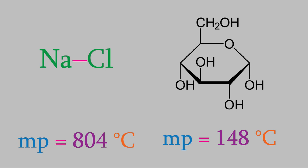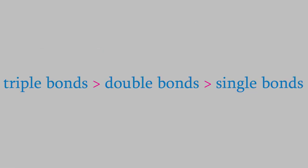This is because, unlike glucose, ionic compounds are connected by strong ionic bonds. We can also make predictions about the strengths of different covalent bonds. For example, as you'd probably guess, triple bonds are much stronger than double bonds, and double bonds are stronger than single bonds.